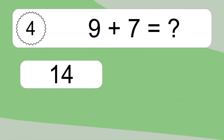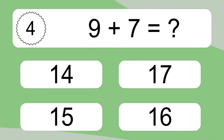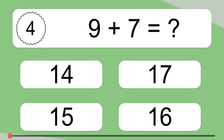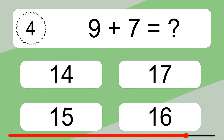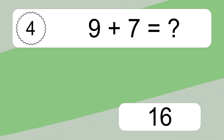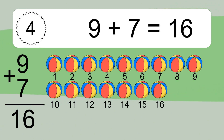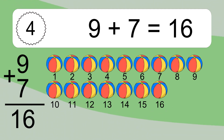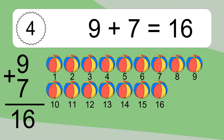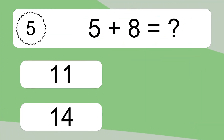9 plus 7 equals what? 9 plus 7 equals 16. Let's count it: 1, 2, 3, 4, 5, 6, 7, 8, 9, 10, 11, 12, 13, 14, 15, 16.